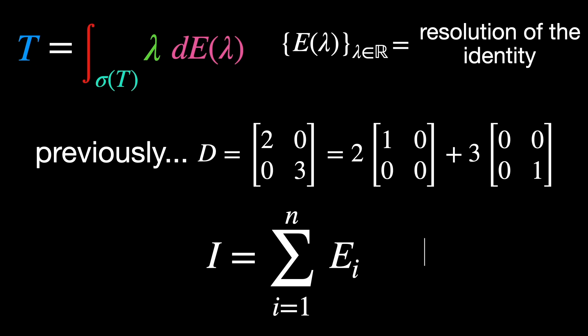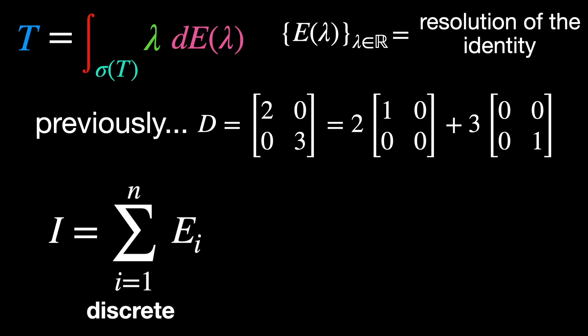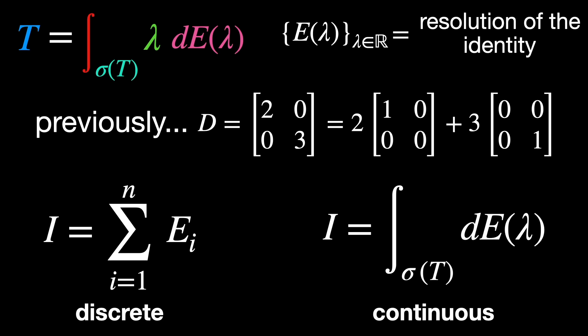In the continuous case, we'd write that I is the integral over sigma of T of dE of lambda. Each tiny increment dE of lambda acts like a projection onto the infinitesimal layer of the space aligned with the spectral value lambda. You can think of dE of lambda as a sort of spectral density.